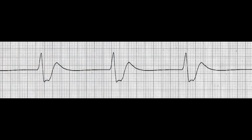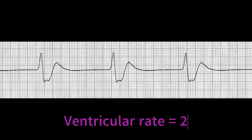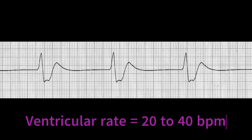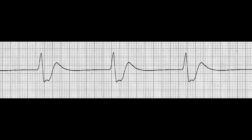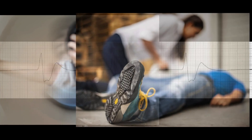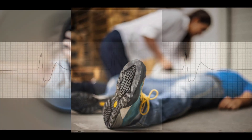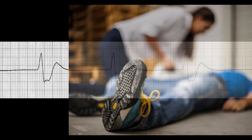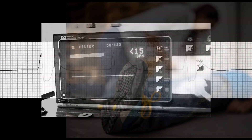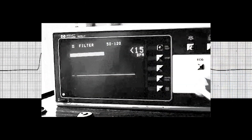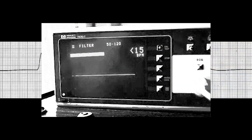Idioventricular rhythm typically presents with a slow heart rate, ranging from 20 to 40 beats per minute. Due to the very low heart rate, patients may experience dizziness, lightheadedness, or fainting due to decreased cardiac output. This is the reason why this rhythm is considered one of the potentially lethal EKG rhythms.